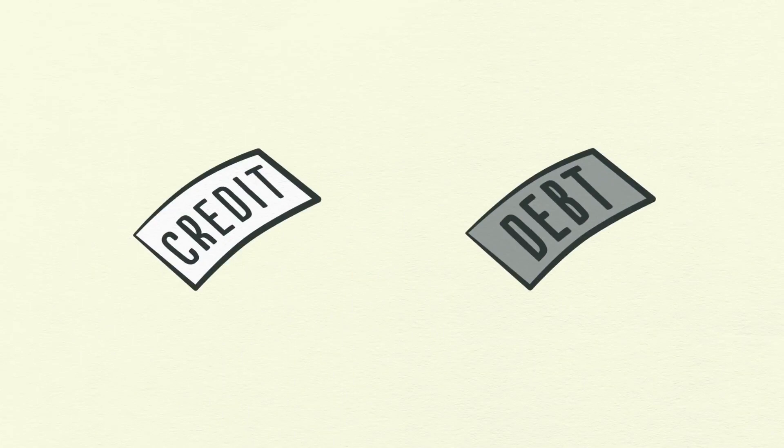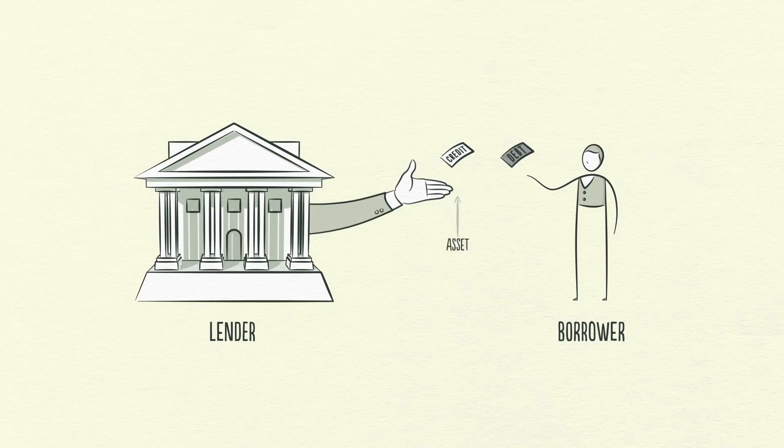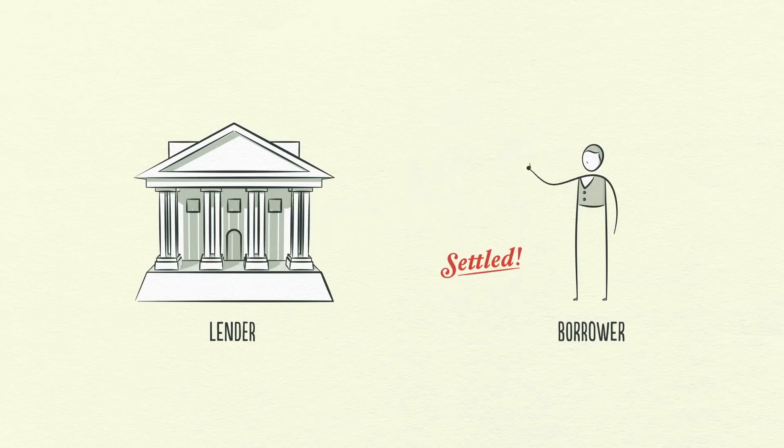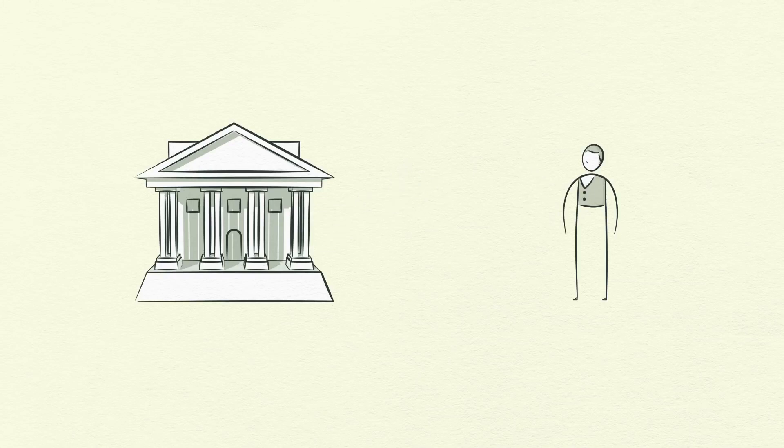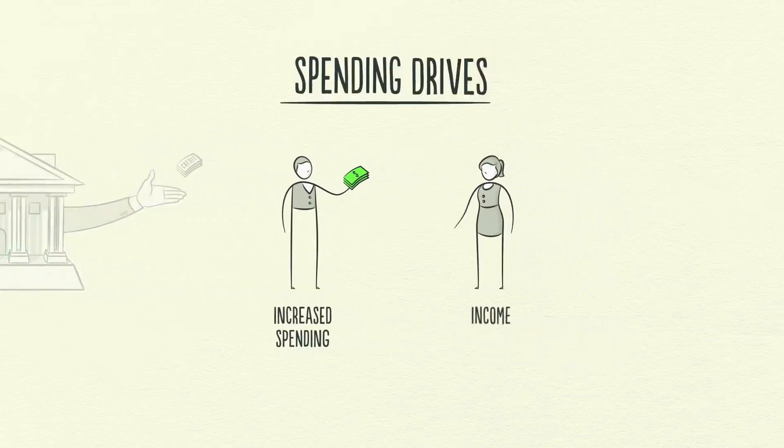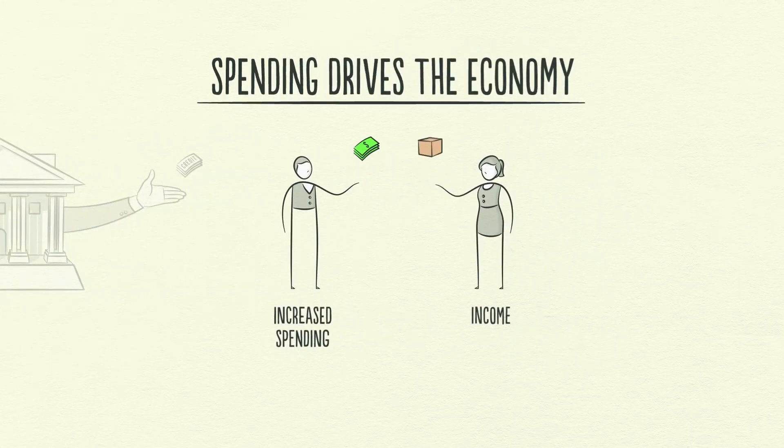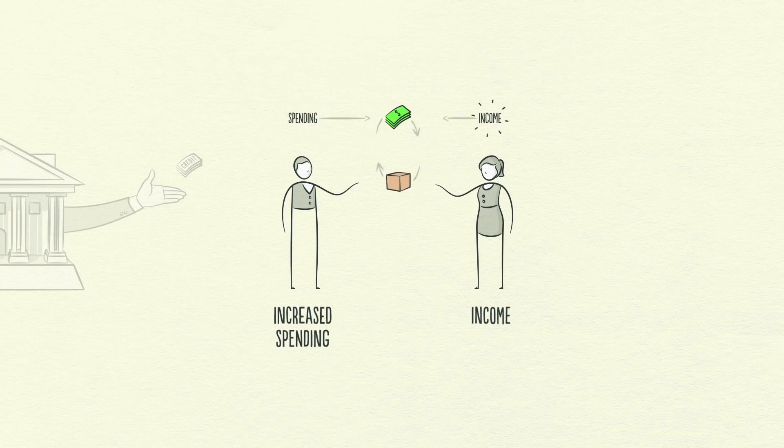As soon as credit is created, it immediately turns into debt. Debt is both an asset to the lender and a liability to the borrower. In the future, when the borrower repays the loan, plus interest, the asset and the liability disappear and the transaction is settled. So why is credit so important? Because when a borrower receives credit, he is able to increase his spending. And remember, spending drives the economy.